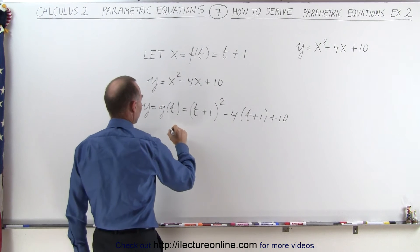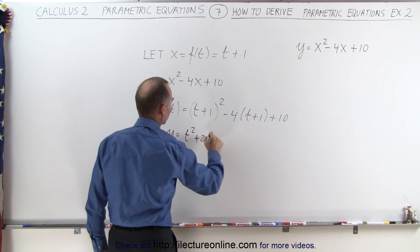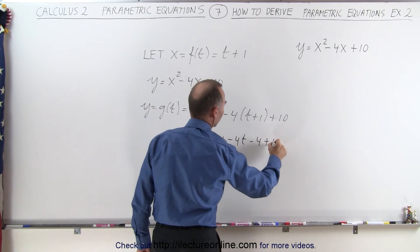So now let's work this out. In this case, y will be equal to t squared plus 2t plus 1 minus 4t minus 4 plus 10.